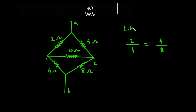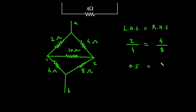This is LHS — left hand side — and this is RHS. 2 by 4 is 1 by 2, which is 0.5. And on this side, it is 4 by 8, which is also 1 by 2, equal to 0.5. Hence the bridge is balanced.